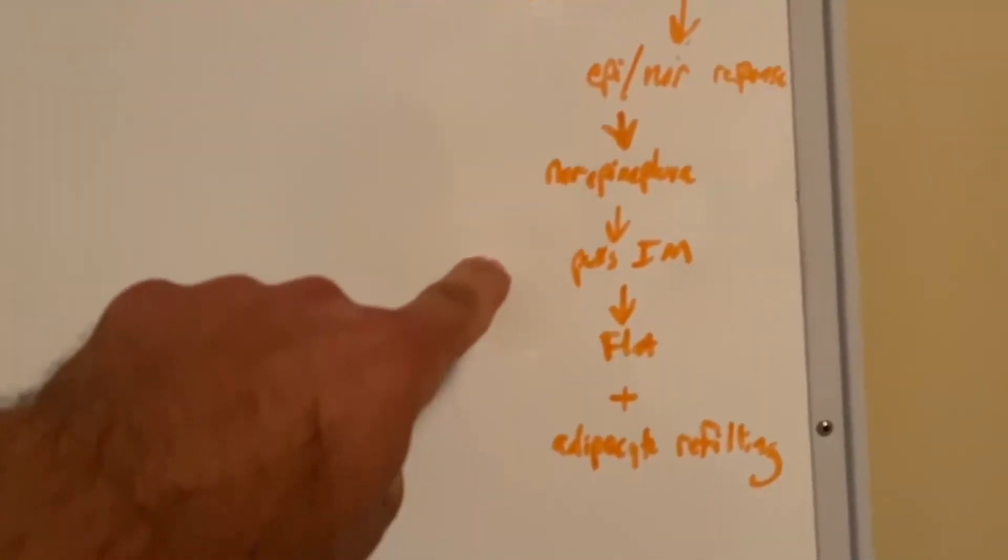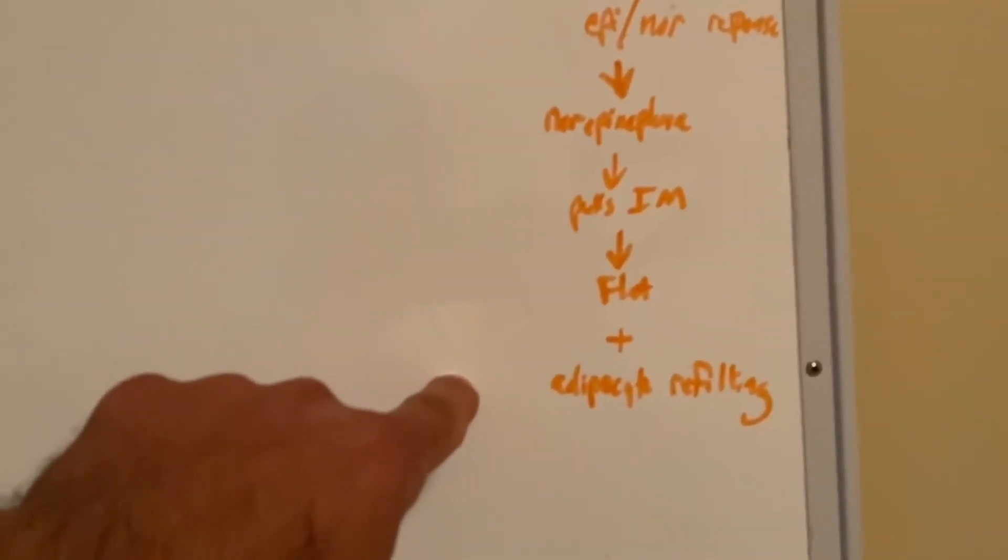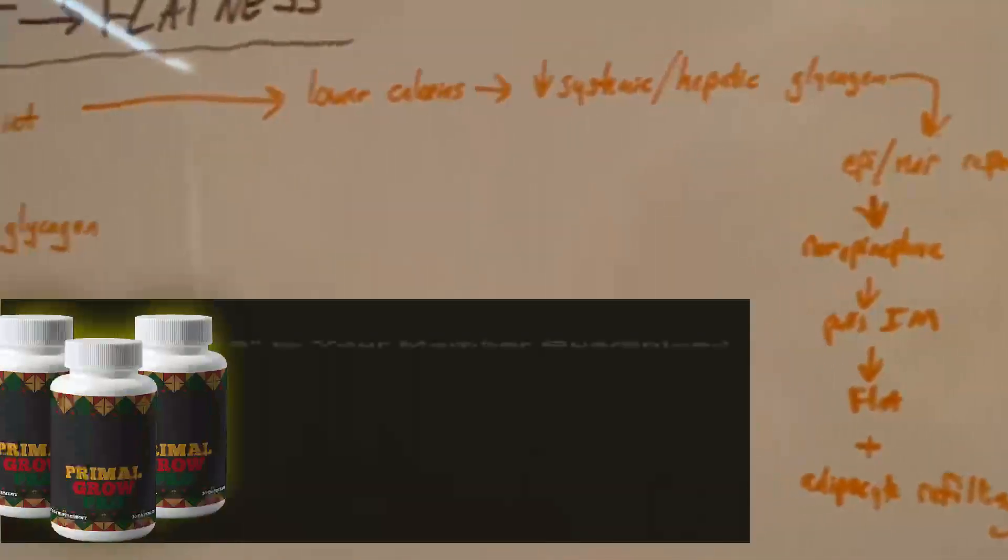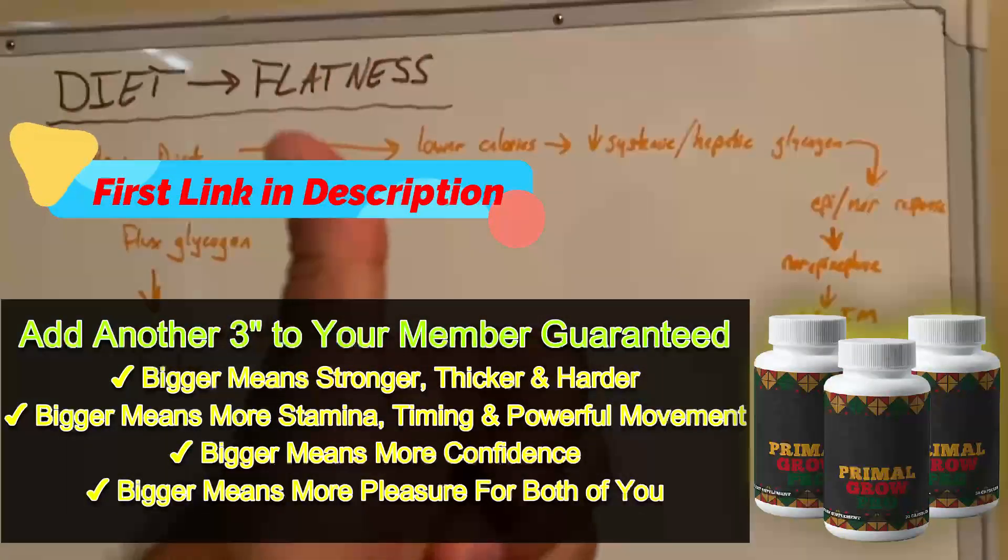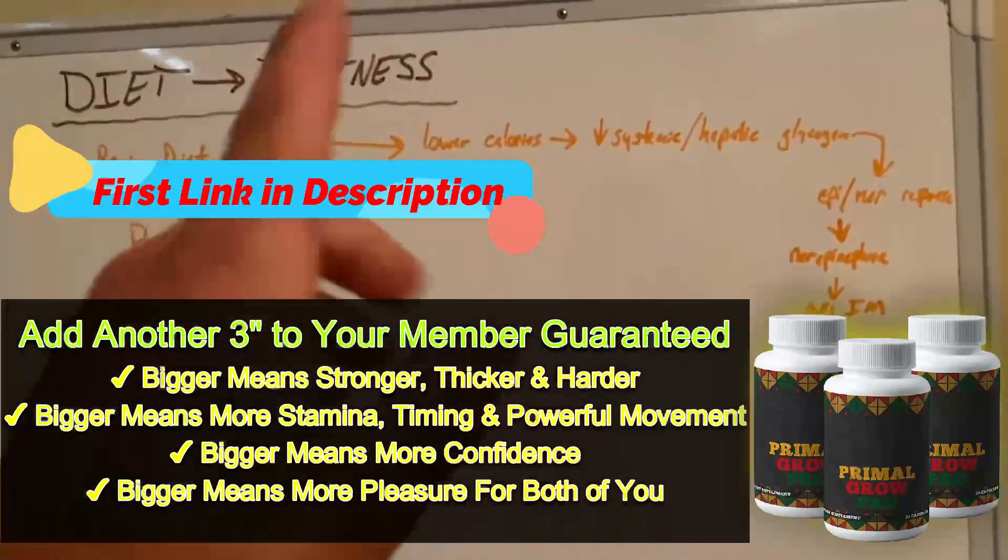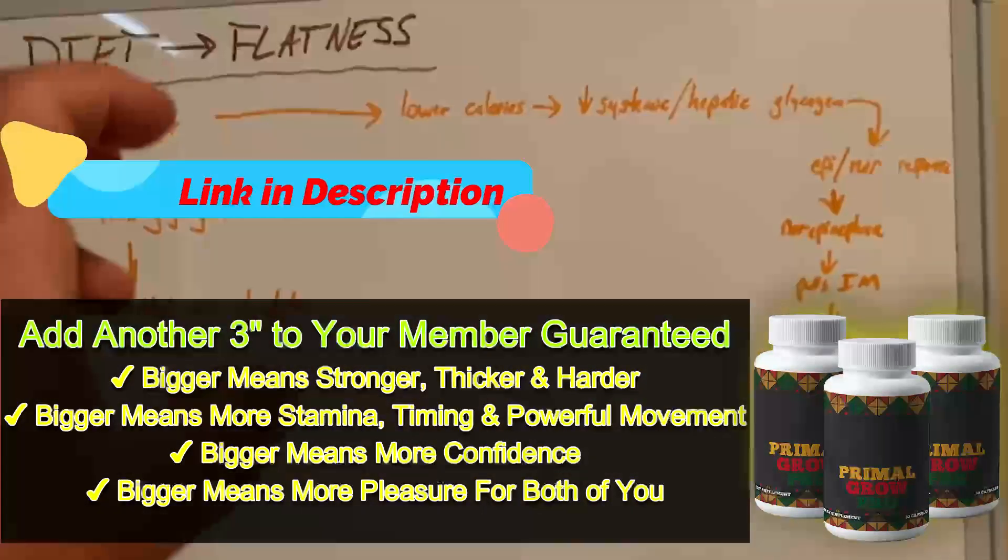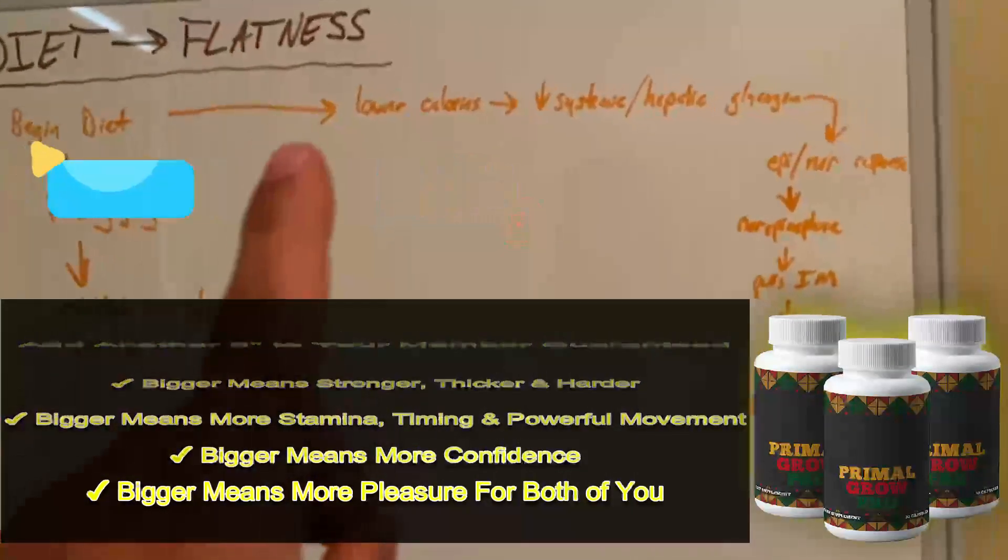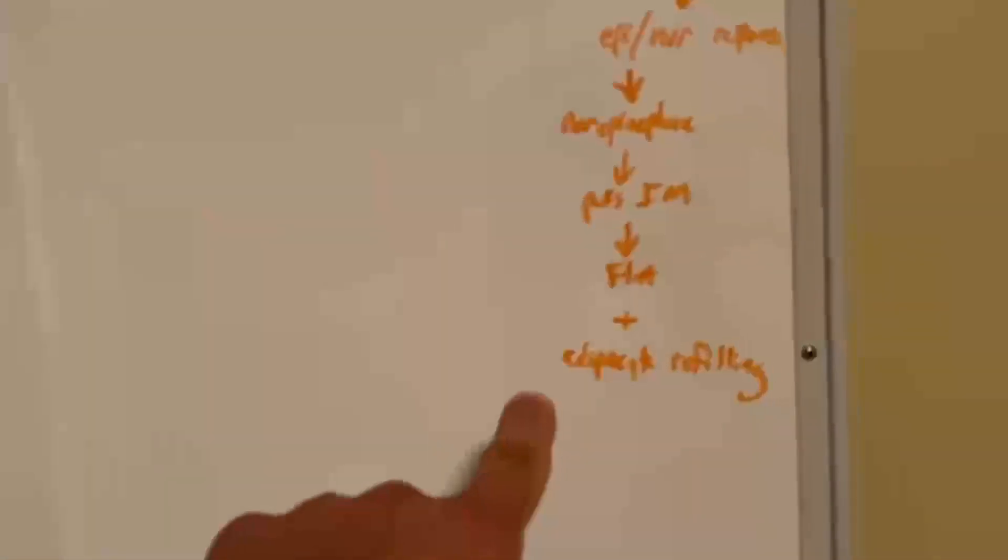That changes our intramuscular response. You see that norepinephrine response, it starts pulling intramuscular glucose, we end up looking flat, and then we also have that adipocyte refilling effect. So basically what's happening is we start dieting, we start lowering calories, our muscles and liver begin to pull glycogen. That causes an increase in norepinephrine response to further pull and liberate more intramuscular glycogen.